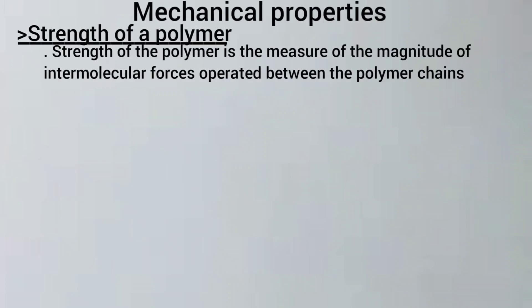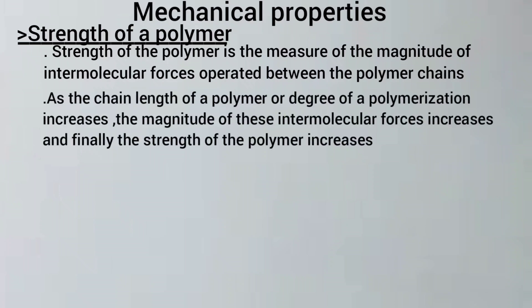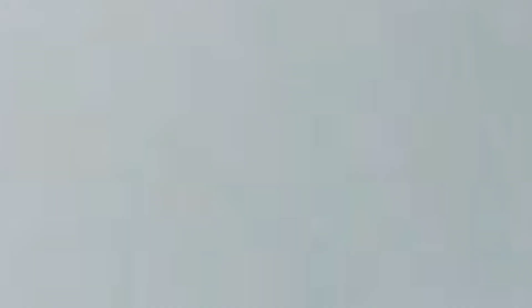Regarding mechanical properties — strength of a polymer is a measure of the magnitude of intermolecular forces operating between the polymer chains. As the chain length of the polymer or degree of polymerization increases, the magnitude of these intermolecular forces increases, and finally, the strength of the polymer increases.